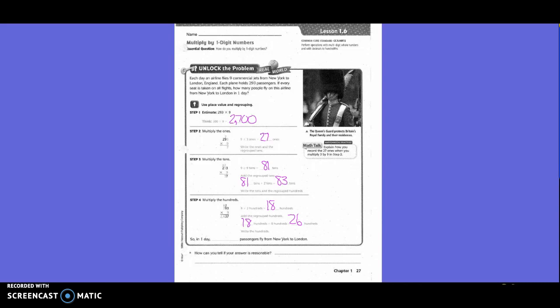So in one day, what did we get for our answer? 2,637 passengers fly from New York to London. How can you tell if your answer is reasonable? We can tell that our answer is reasonable because 2,637 is close to 3,000.